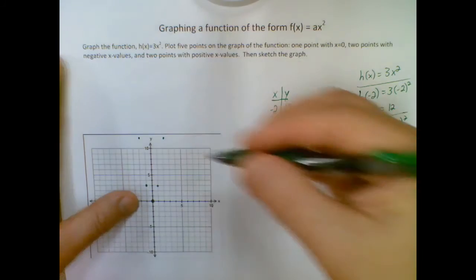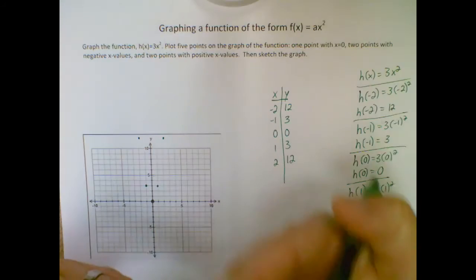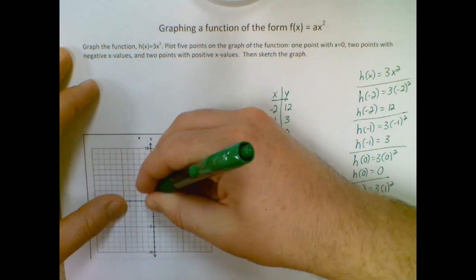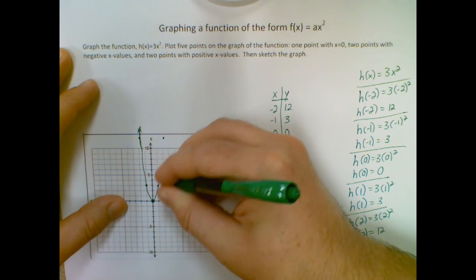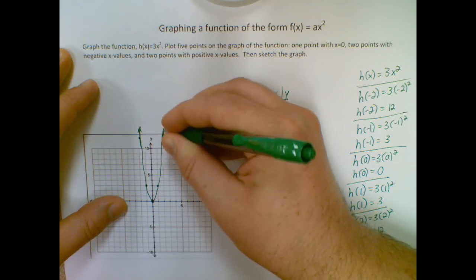Those are my five points. Remember I'm going to get that curvy U shape because it's an x squared. So if I sketch through these it'll kind of look like that.